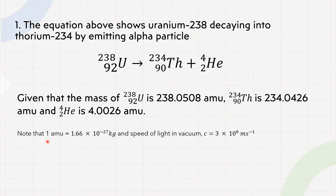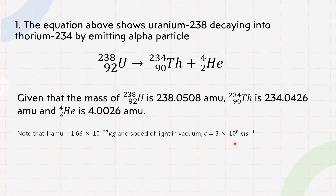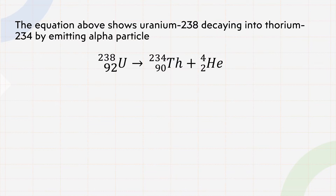Note that one atomic mass unit is equal to 1.66 times 10 to the power of negative 27 kilograms, and the speed of light in vacuum is c equals 3 times 10 to the power of 8 meters per second.